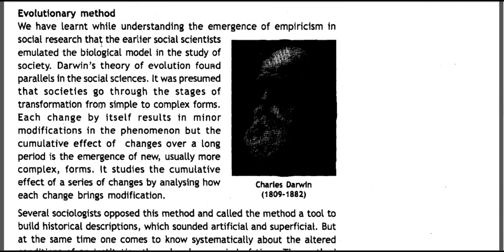Evolutionary Method. We have learned while understanding the emergence of empiricism in social research that earlier social scientists emulated the biological model in the study of society. Darwin's theory of evolution found parallels in the social sciences. It was presumed that societies go through stages of transformation from simple to complex forms — each change by itself results in minor modification in the phenomena, but the cumulative effect of change over a long period results in the emergence of a new, usually more complex form. It studies the cumulative effect of a series of changes by analyzing how each change brings about modification.